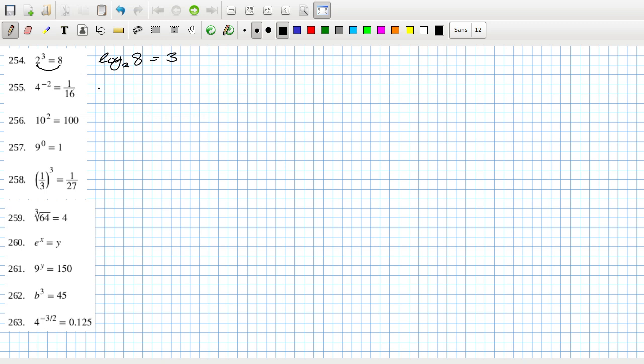So this would be log base 4 of 1/16 equals minus 2. This is log base 10 of 100 equals 2. Log base 9 of 1 equals 0. Log base a third of 27 equals 3.